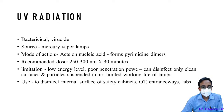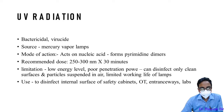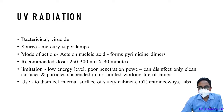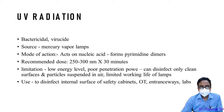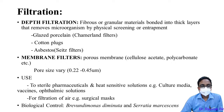UV radiation is bactericidal and virucidal. The main source is mercury vapor lamps. Its action causes damage to nucleic acids by producing pyrimidine dimers, rendering pathogens dead. Recommended dose: 250 to 300 nanometer wavelength for 30 minutes. Limitations: low energy level, poor penetrative power compared to gamma rays, can only disinfect clean surfaces, limited working life of the lamp. Used to disinfect internal surfaces of cabinets, OTs, entrances, and labs.